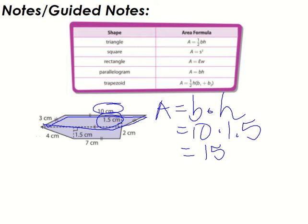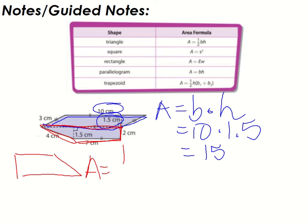That's just the parallelogram. Now we have to find the area of this other shape, which is actually a trapezoid. A trapezoid is a quadrilateral that has one pair of parallel sides — the top and the bottom. If I drew it upright, how you're more used to seeing it, it would look like that — this is just an upside-down version. The area of a trapezoid is half the height times base one plus base two, where base one and base two are the two parallel sides.